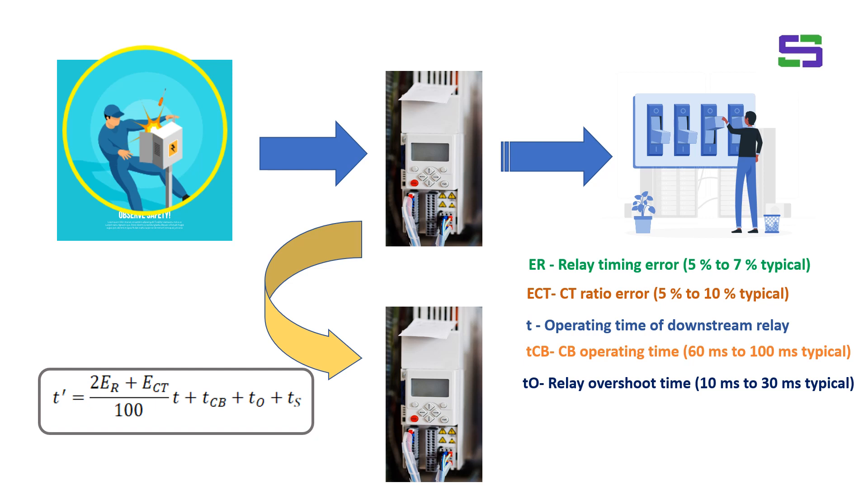So during clearing the fault, the disk will overtravel, and even after the fault clearance, the disk will overtravel and then it will come back to its position. So that overshoot time or the overtravel time, we need to consider during this IDMT relay coordination. In case of numerical relay, you can consider this relay overshoot time as 0 second also, but definitely you need to check the OEM catalog.